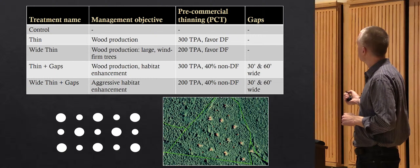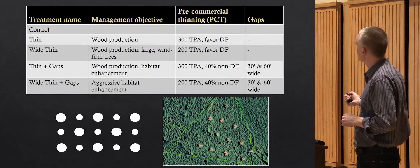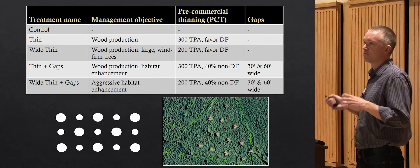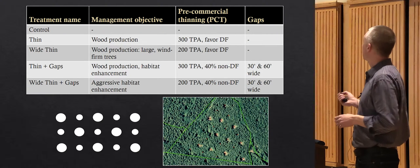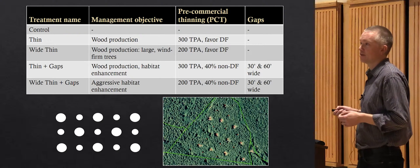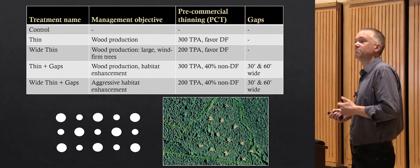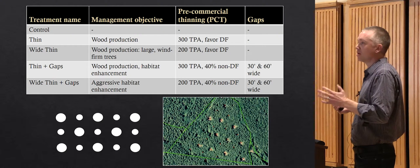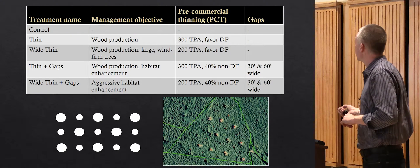You can see here 10 years after they were cut, you can still see in the aerial photo what these gaps look like. These are smaller gaps than the ones Dan was talking about. A 30 foot wide gap is 1/60th of an acre and a 60 foot wide gap is 1/15th of an acre, just on the small end of what Dan was describing.